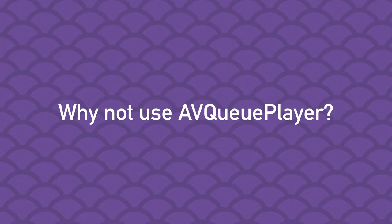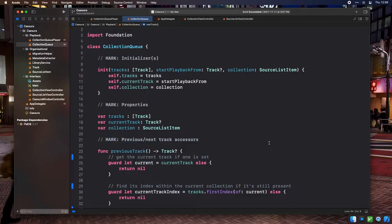Using a regular AVPlayer gives us a lot more freedom in how we wrangle that queue without directly impacting playback, and it lets us defer decisions about what the previous or next track should be until the track finishes playing or until the user explicitly requests a change. Okay, let's start off with Collection Queue.